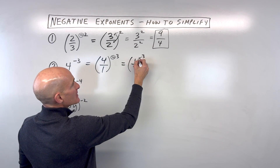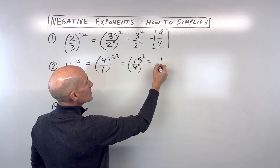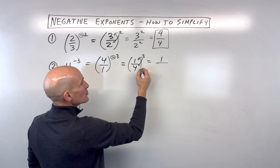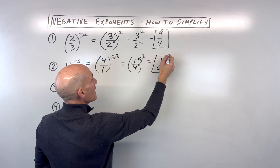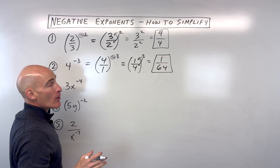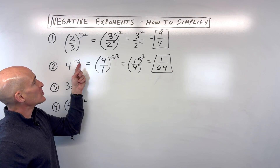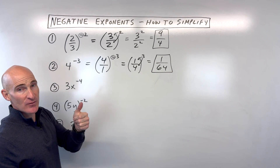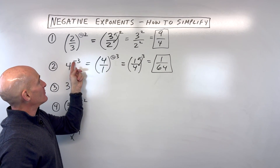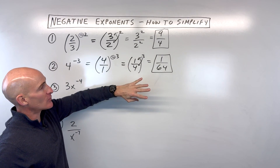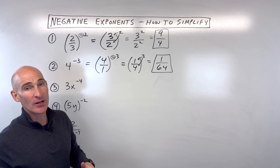Then you can apply that to the numerator and the denominator. One cubed is one times one times one. Four cubed is four times four times four, which is 64. Another way to do this problem is you could just say four cubed is 64, because four times four times four. And then the negative tells us to take the reciprocal of 64, which is one over 64. That's a little bit quicker.